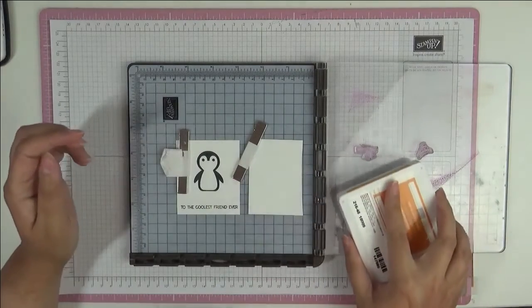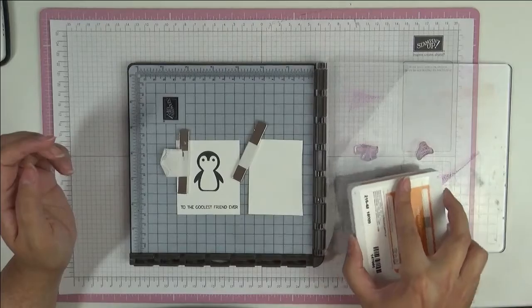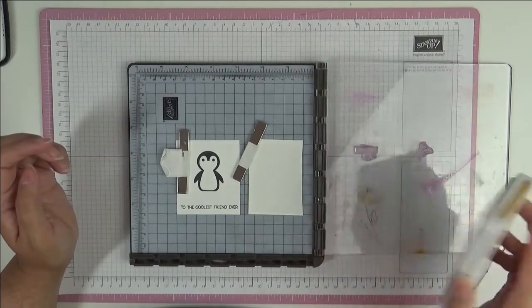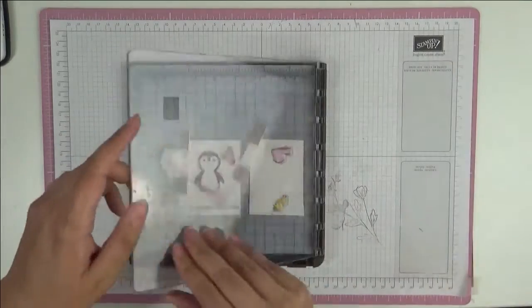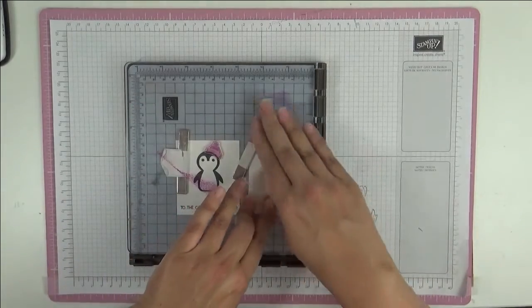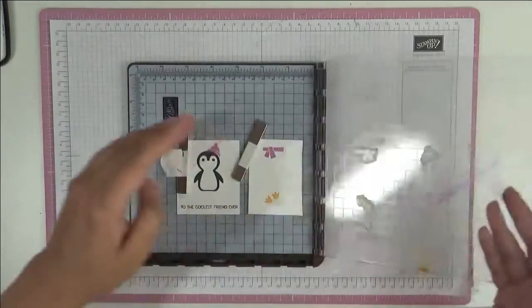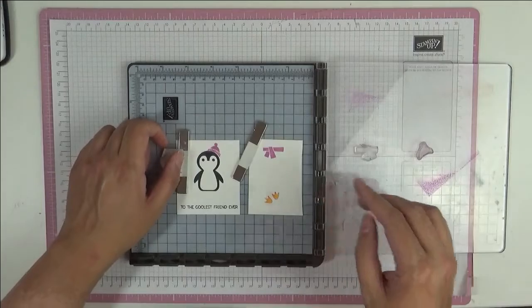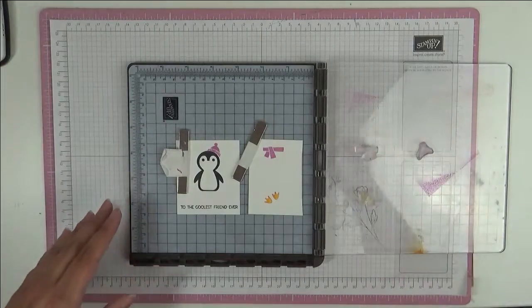Before I stamped in Fresh Freesia ink, I remembered I needed to stamp his scarf as well in Fresh Freesia, and I also need to stamp his tootsies. So we can do all of that in one go. I'm going to ink up his scarf, and then we're going to use some Pumpkin Pie to just ink up his tootsies.